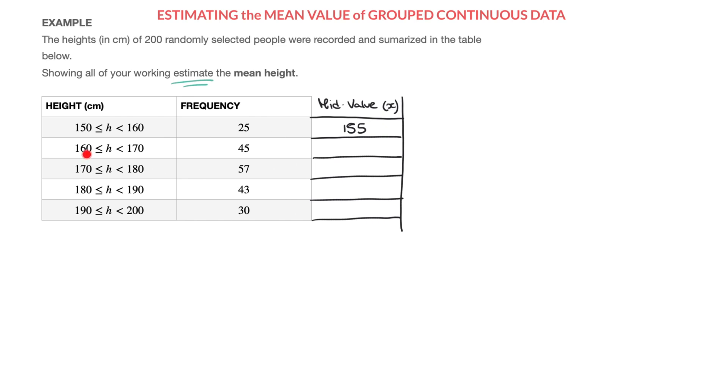For the next row, the mid-value of 170 and 180 would be 175. And carrying on this way, for 180 to 190 we'll have 185.